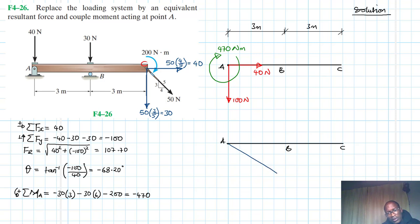So we have the resultant. Let's say the resultant will be somewhere there like this. This is the resultant. And we have the angle just like we calculated it, and this angle is 68.20. And this resultant force we say it is 107.70 newtons. And then we have a couple moment acting at point A, which is 470 newton meters.